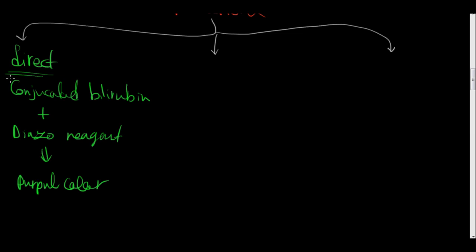And this is called direct reaction of Van Den Bergh. While in the indirect reaction, we have unconjugated form of bilirubin.